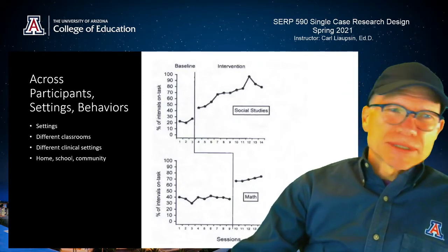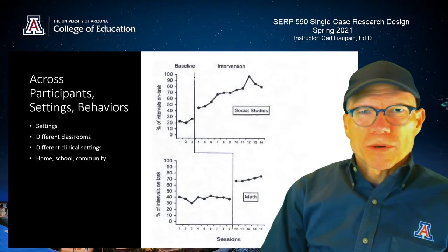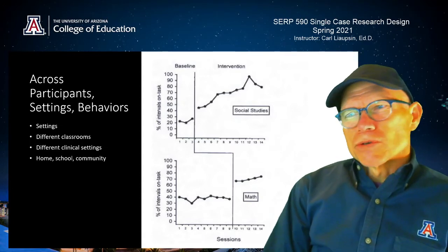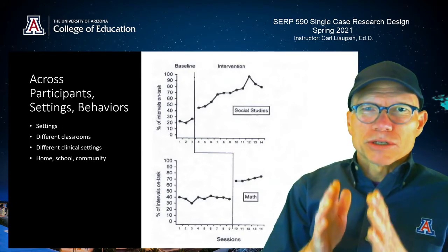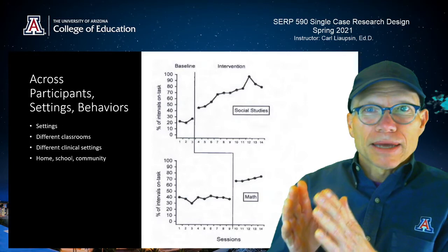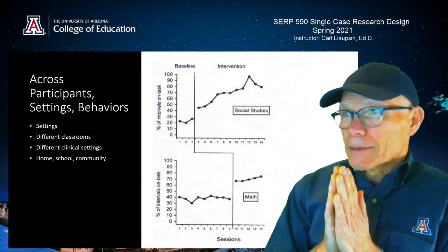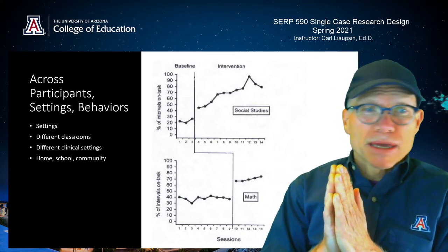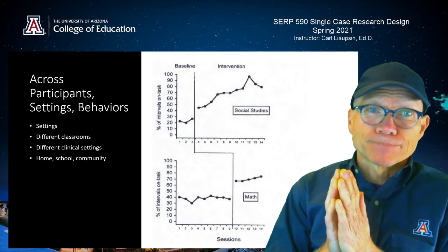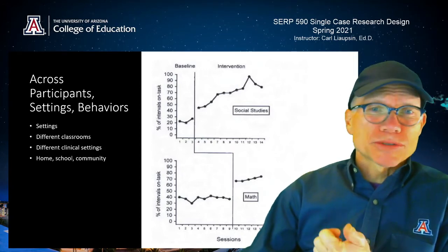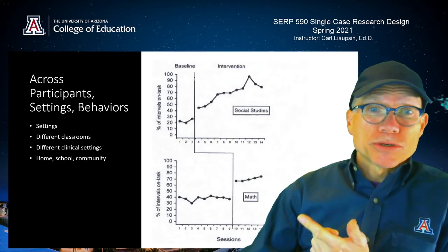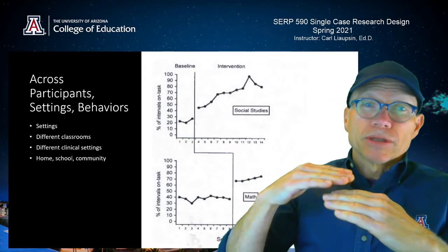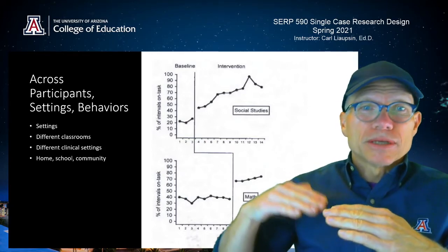Another way to do this is across settings. This graph is from one of my early research pieces in which we created a function-based intervention. We wanted to show that we could create interventions to increase on-task behavior for students, and that the intervention could be transported across settings with the same effect. In this case it was across social studies, then we continued to collect on-task behavior in math — and the math behavior did not improve until we implemented the intervention. You could do this across classrooms, clinical settings, or home, school, and community.